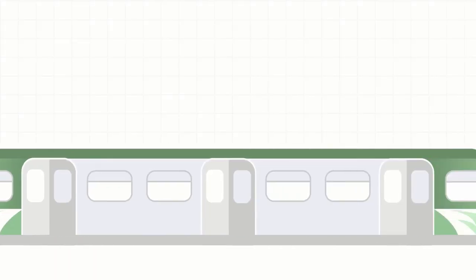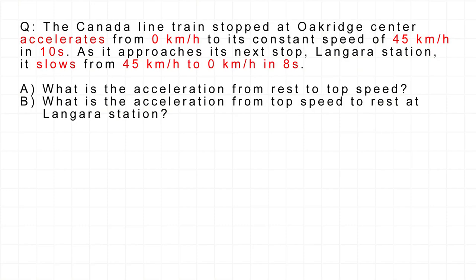Now let's return to our acceleration problem. The Canada Line train stopped at Oak Ridge Center accelerates from zero kilometers per hour to its constant speed of 45 kilometers per hour in 10 seconds. As it approaches its next stop, Langara Station, it slows from 45 kilometers per hour to zero kilometers per hour in 8 seconds. Part A: What is the acceleration from rest to top speed? Part B: What is the acceleration from top speed to rest at Langara Station?